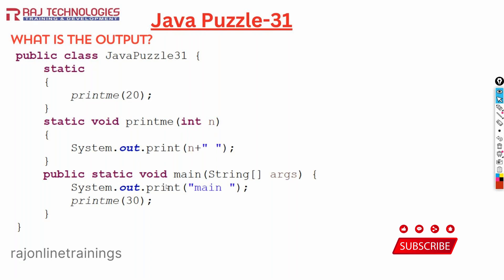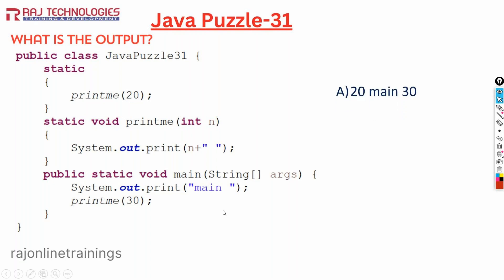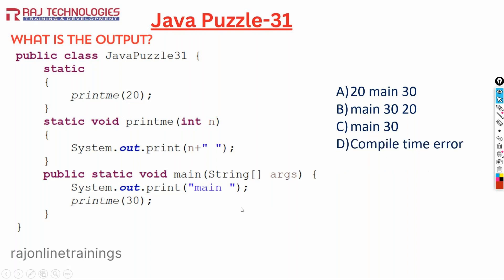Coming to the main method, we are printing the message 'main' and then calling printme again passing 30. So 30 will go to n and we are going to print the value of n. Now let us see the options: option A displays 20, main, 30; option B displays main, 30, 20; option C displays main and 30 only; or it may give a compile time error.